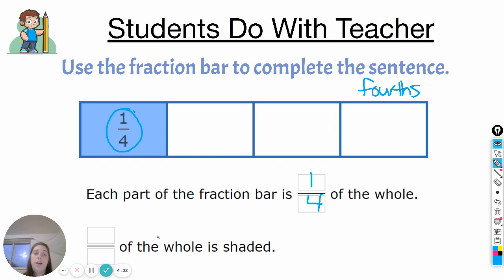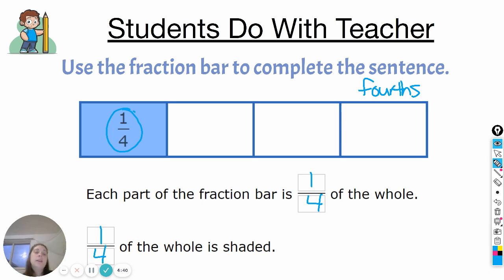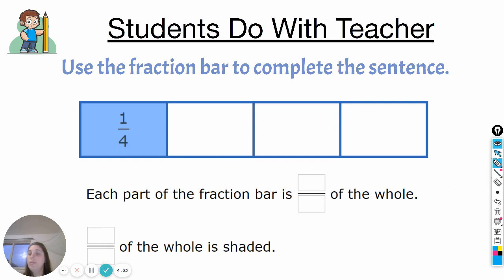Okay, so how much of the whole is shaded? Just one piece is shaded — one piece out of the four pieces — so one-fourth of the whole is shaded. Go ahead and erase your whiteboards; we're going to take a look at another example.